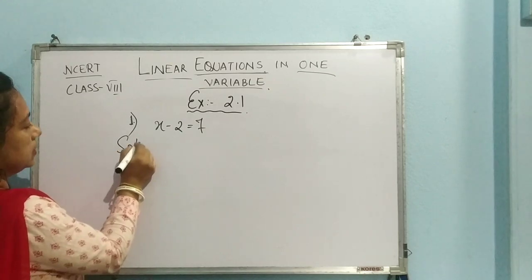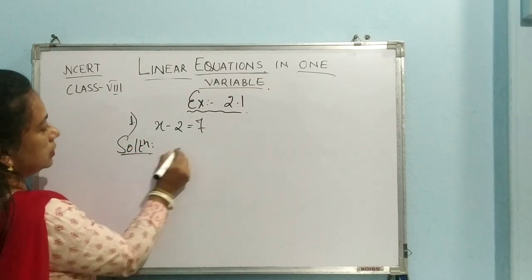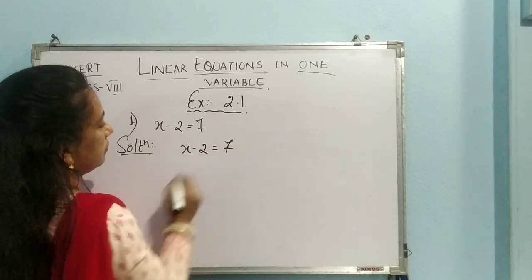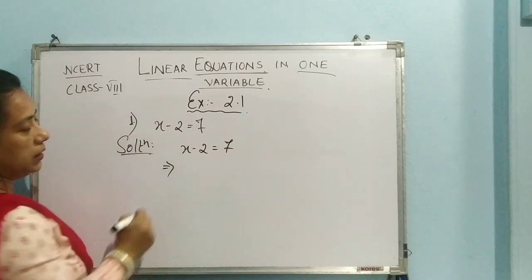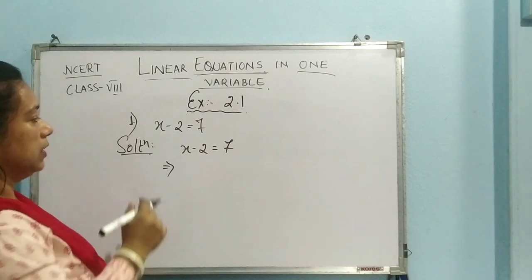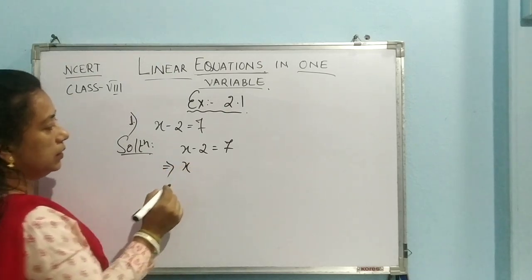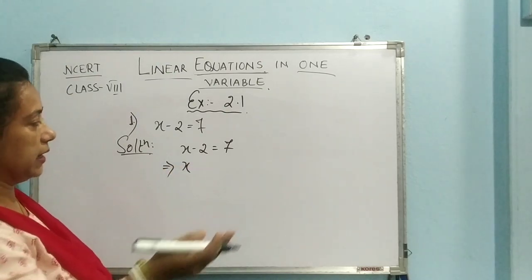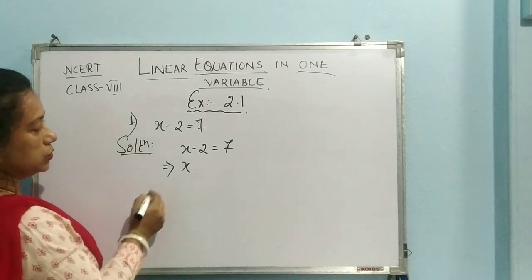So we will be starting solution, x minus 2 equal to 7. In the last video only I have explained two methods. So I will be doing with the second method, that is the transposing method. It is quite easier, if you wish, you can go for the other method also.